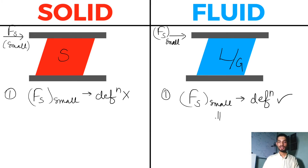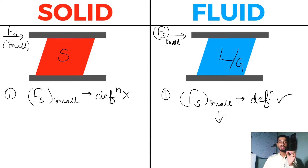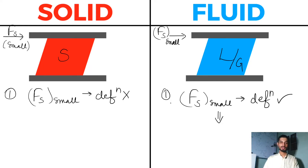One thing is clear from here: even if you apply a small or infinitesimal amount of shear force on a fluid, you will certainly see deformation. There is no such case where you apply a shear force to a fluid and won't see deformation — you will always see the deformation. The second thing is: what is the nature of this deformation in solid and liquid?